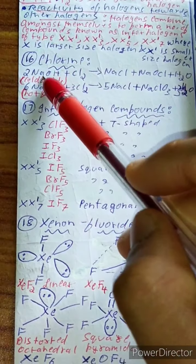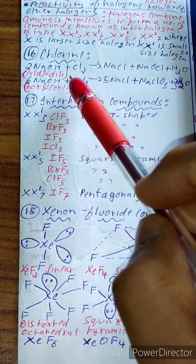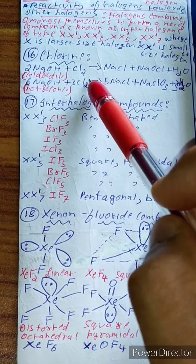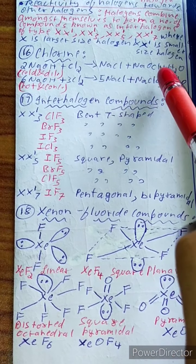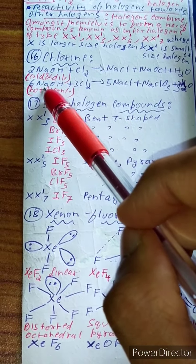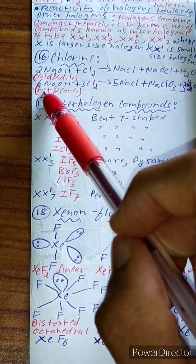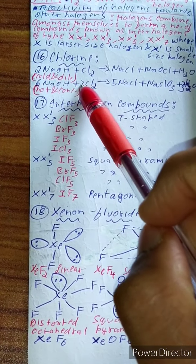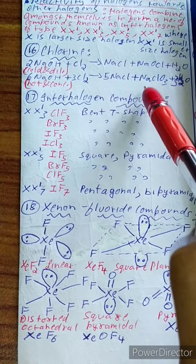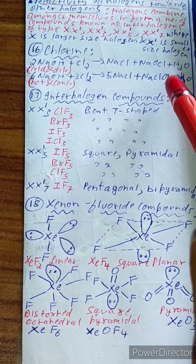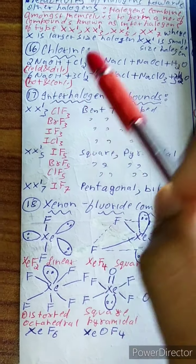Reaction of chlorine with NaOH: 2NaOH (cold, dilute) + Cl₂ → NaCl + NaOCl + H₂O. 6NaOH (hot, concentrated) + 3Cl₂ → 5NaCl + NaClO₃ + 3H₂O.